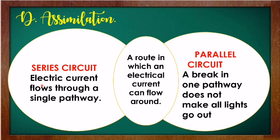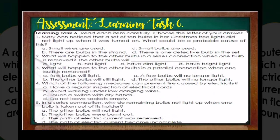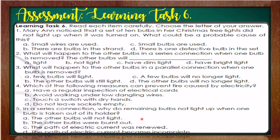Again, what is a series circuit? Electric current flows through a single pathway — that is a series circuit. And a break in one pathway does not make all lights go out — that is the parallel circuit. What are their similarities? They are both a route in which an electrical current can flow around. For Learning Task number 6, answer each item carefully and choose the letter of the correct answer.